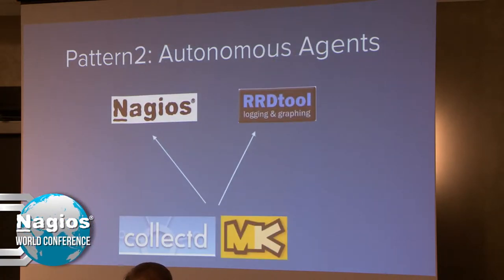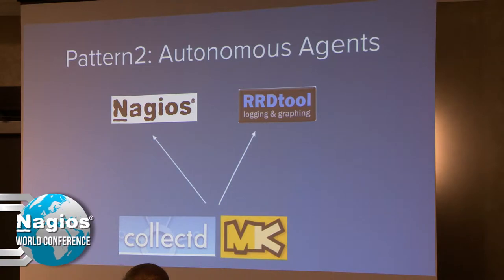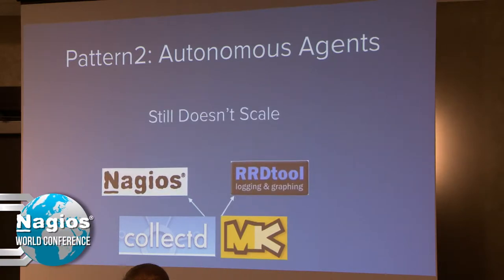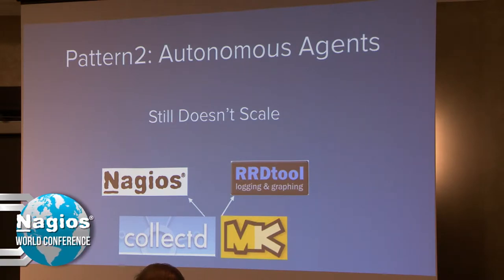Two really popular tools in this space are collectd and check_MK. Both of them have excellent support for both Nagios and RRD tool and can provide very high resolution data if you configure them to. The problem with the autonomous agent pattern in general is that it's still difficult to scale into the hundreds of thousands of hosts. It does help because we get passive checks, but it's still not exactly the answer to scaling.